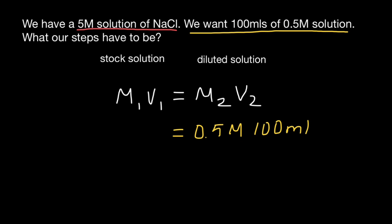We don't know the volume. So let's put 5 molar here, and V1, the volume we don't know. In this formula, we have multiplication signs here and here.